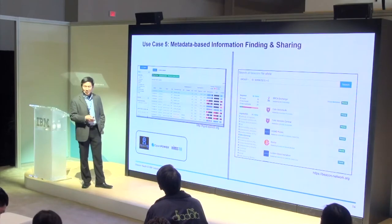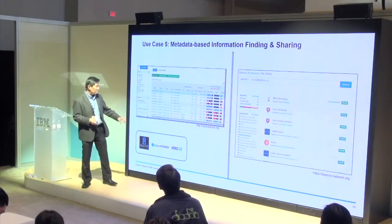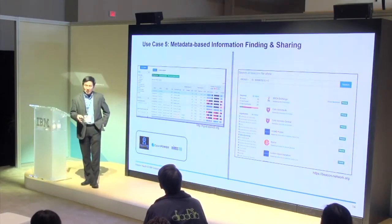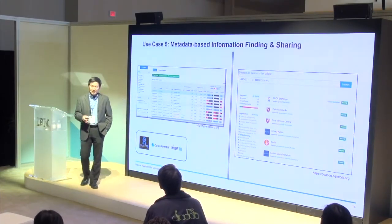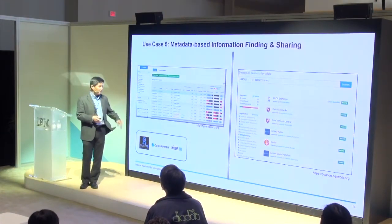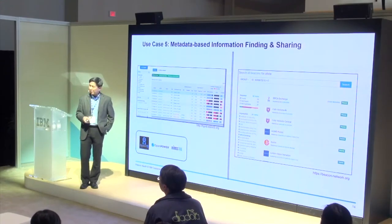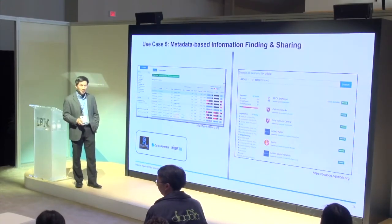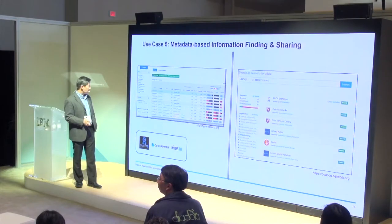Bring your favorite genes or mutations. We can annotate from the most commonly used databases including NCBI, Cosmic, and ClinVar — and we can even show you if that mutation has an active clinical trial going on. This is a very cool technology we want to show you.